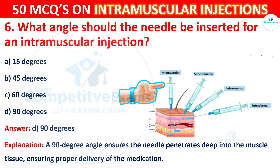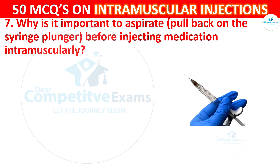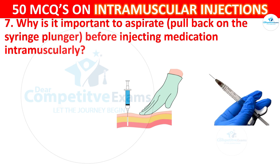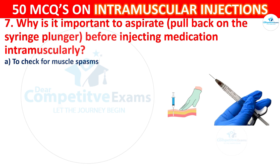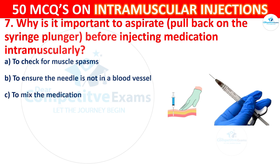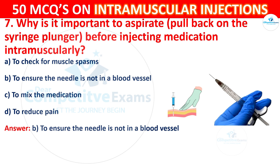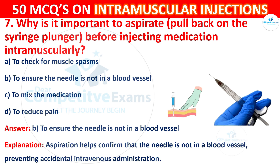Question 7: Why is it important to aspirate — that is, pull back on the syringe plunger — before injecting the medication intramuscularly? Options are: to check for muscle span, to ensure the needle is not in a blood vessel, to mix the medication, or to reduce pain. The correct answer is B. Aspiration helps confirm that the needle is not in a blood vessel, preventing accidental intravenous administration.